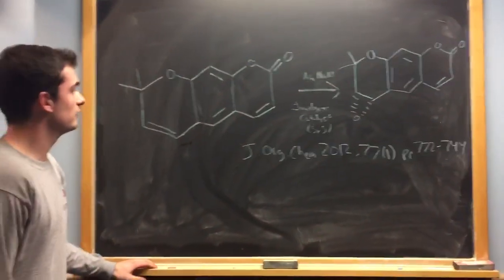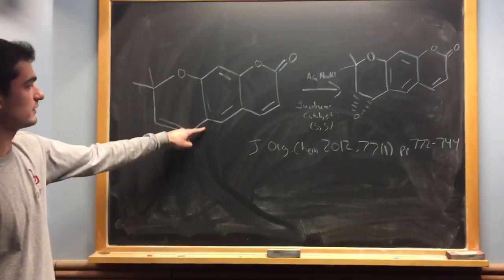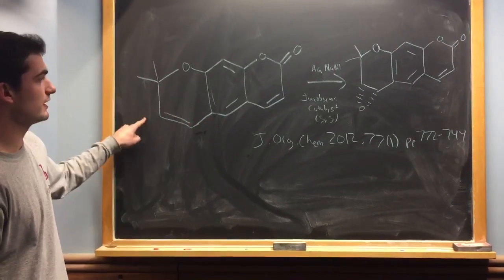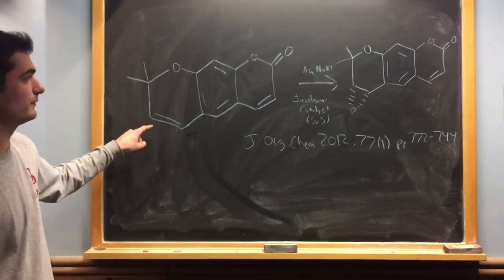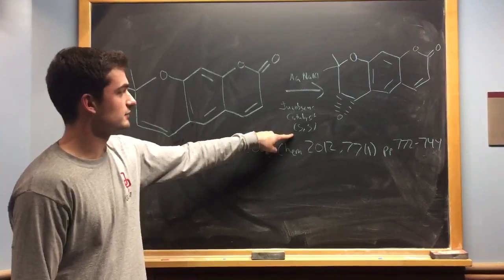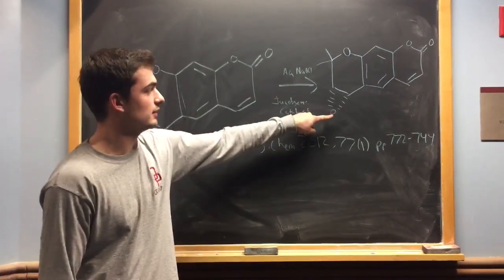And let's take a look at the literature example. Right here, this would be flipped over, so R-large is right here, and R-small is right here. So then if you have the SS version of this catalyst, then you'll get the alpha product.